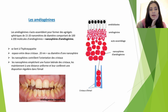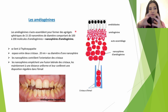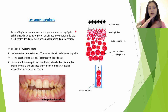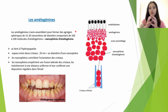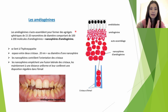Les amélogénines sont des protéines qui vont s'auto-assembler et former des agrégats sphériques de 15 à 20 nanomètres de diamètre comportant de 100 à 200 molécules d'amélogénines : ce sont les nanosphères d'amélogénine. Ces nanosphères vont se lier aux cristaux d'hydroxyapatite et se placer entre ces cristaux, formant un espace de 20 nanomètres correspondant au diamètre d'une nanosphère. En s'interposant entre les cristaux, elles vont contrôler leur orientation, empêcher une fusion latérale et maintenir les cristaux à une distance uniforme, leur conférant une disposition régulière dans l'émail.